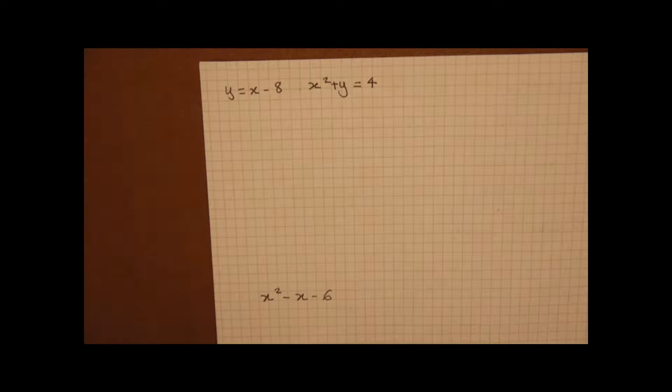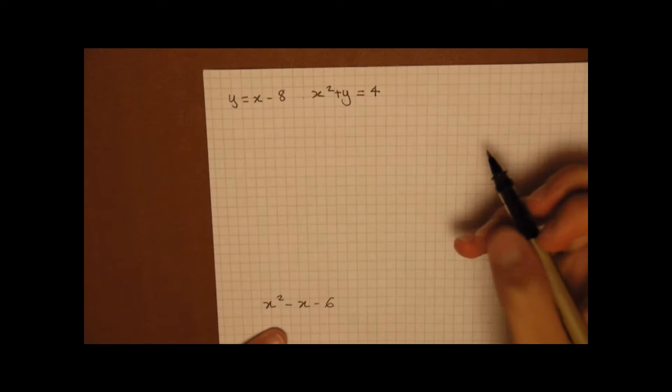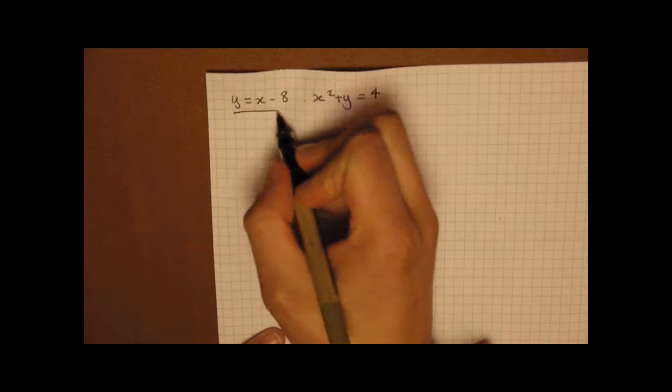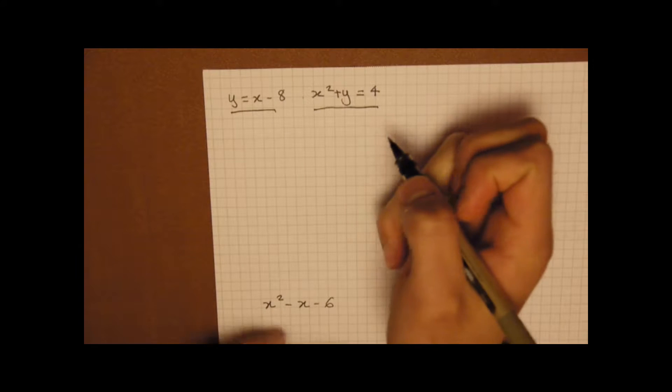Welcome to this tutorial on solving simultaneous equations with x squared and y squared terms and also quadratic inequalities. Now I'll start with the first question that I've got here, which is y equals x minus 8 and x squared plus y equals 4.